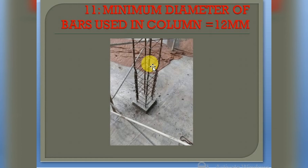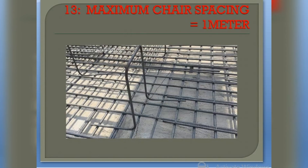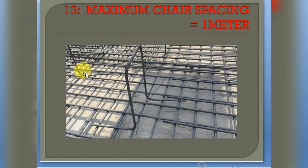The next point is the minimum chair spacing, which is equal to 1 meter. Here I have shown you the chair — chairs are used to place the reinforcement when two reinforcement meshes need to be provided at some distance. The maximum distance between two chairs must be one meter. From this chair to this chair, the distance must be one meter, not more than that.